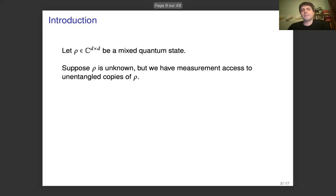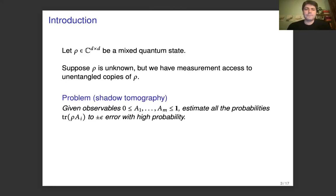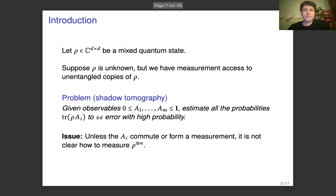Now in the quantum case, we start with a mixed quantum state rho, which we suppose is unknown, but we have measurement access to unentangled copies of rho. The shadow tomography problem says that given observables a1 to am, which are bounded above by the identity, we want to estimate all of their means or probabilities — of the form trace(rho * ai) — to plus or minus epsilon error with high probability. In the quantum case, there's an issue in that unless these observables commute or naturally form a measurement, it's not at all clear how we can measure our copies of rho to simulate the sampling process in the classical case.